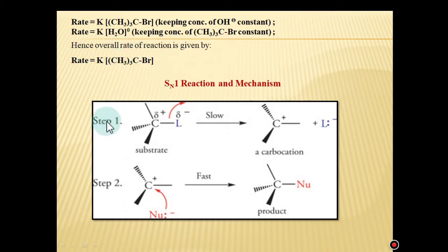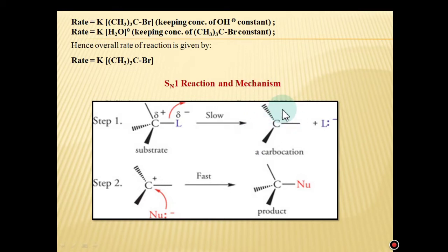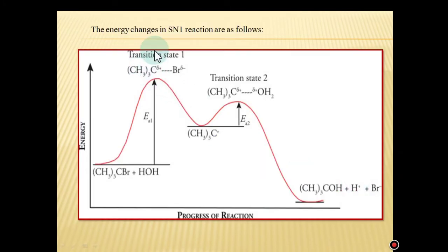It is a two-step reaction. In step number one, there is formation of an important intermediate which is called a carbocation. Remember that in SN2 reaction, a carbocation does not form — instead a transition state is formed. In step number two, the carbocation reacts with the nucleophile and the substituted product is formed.